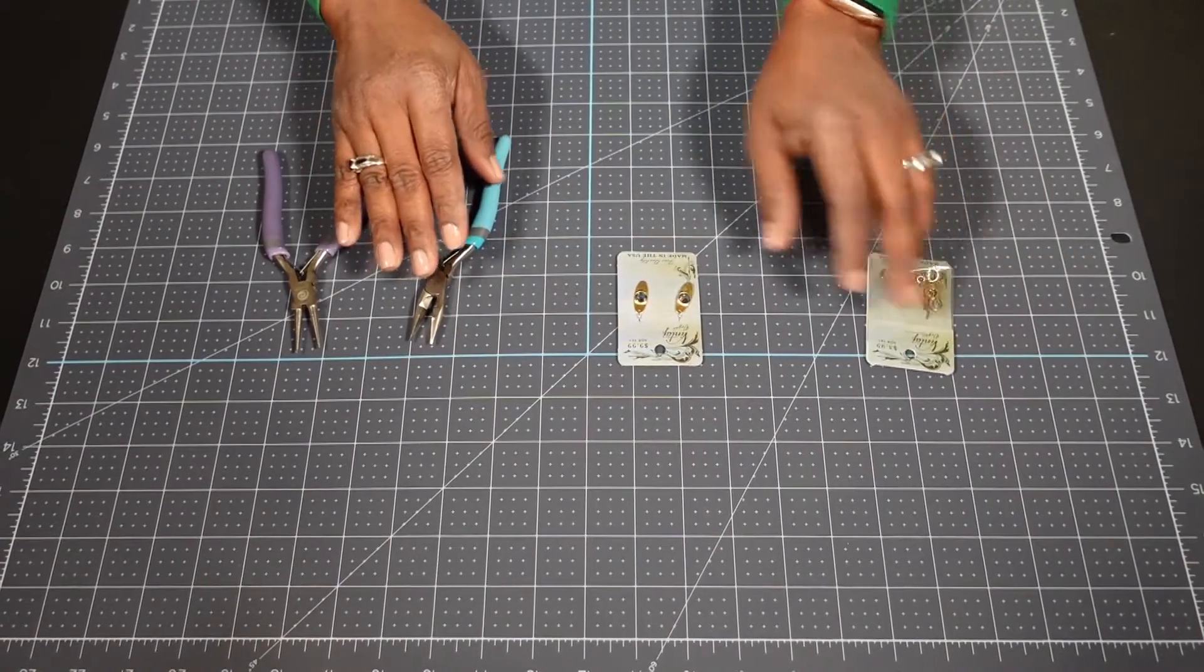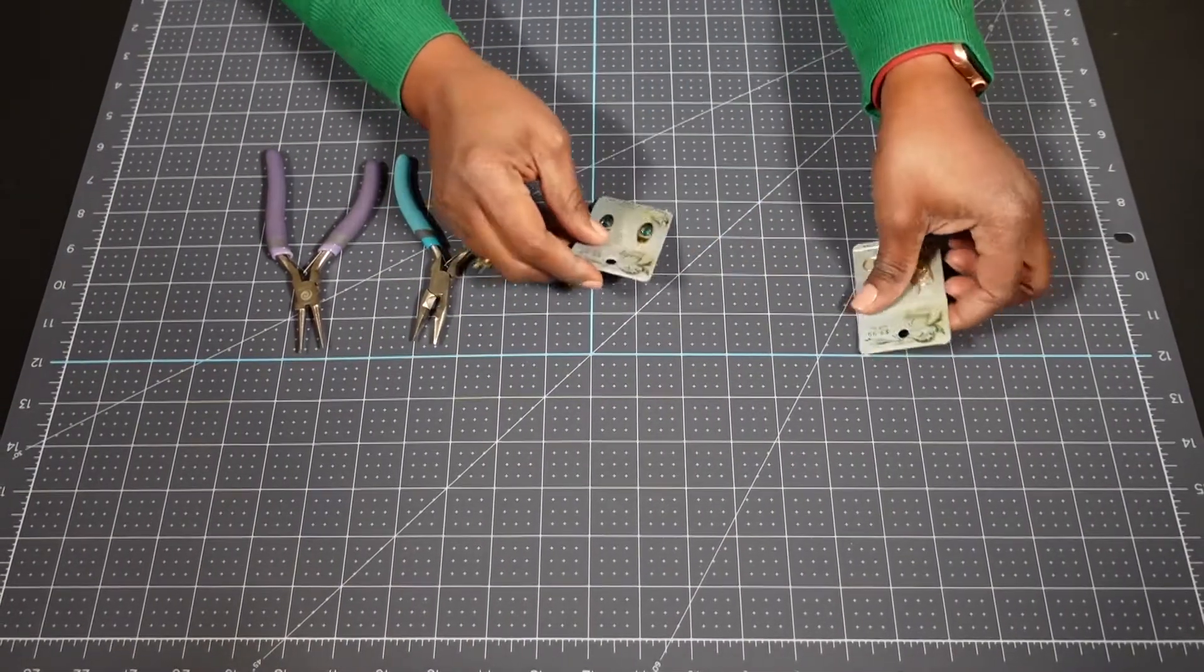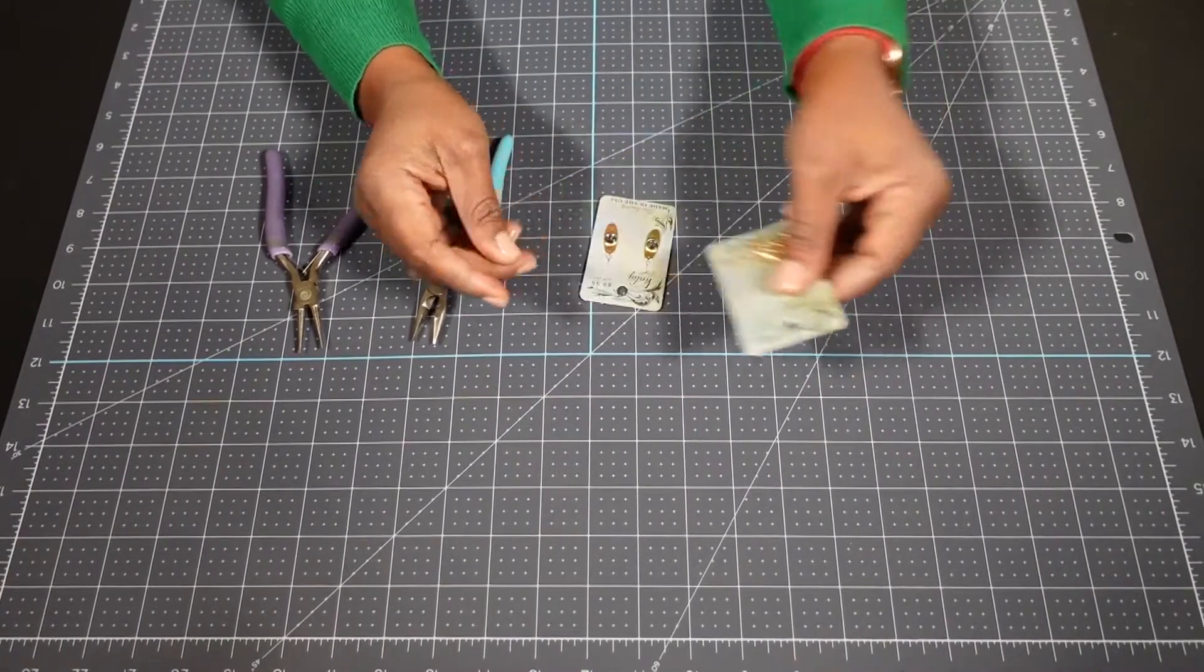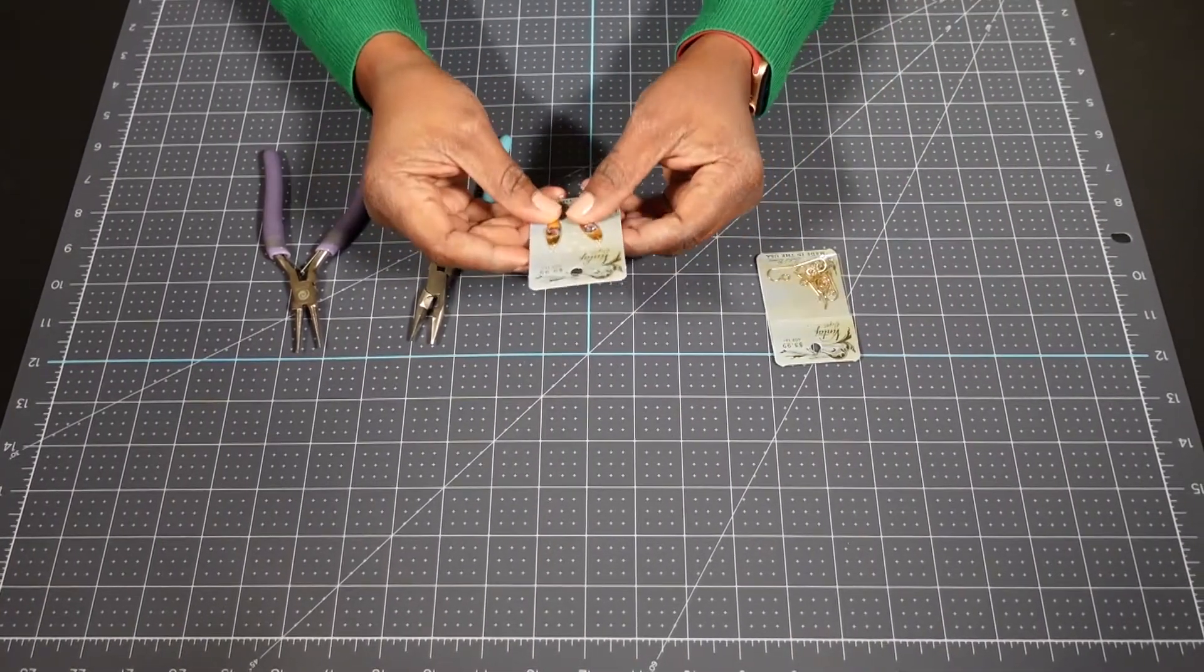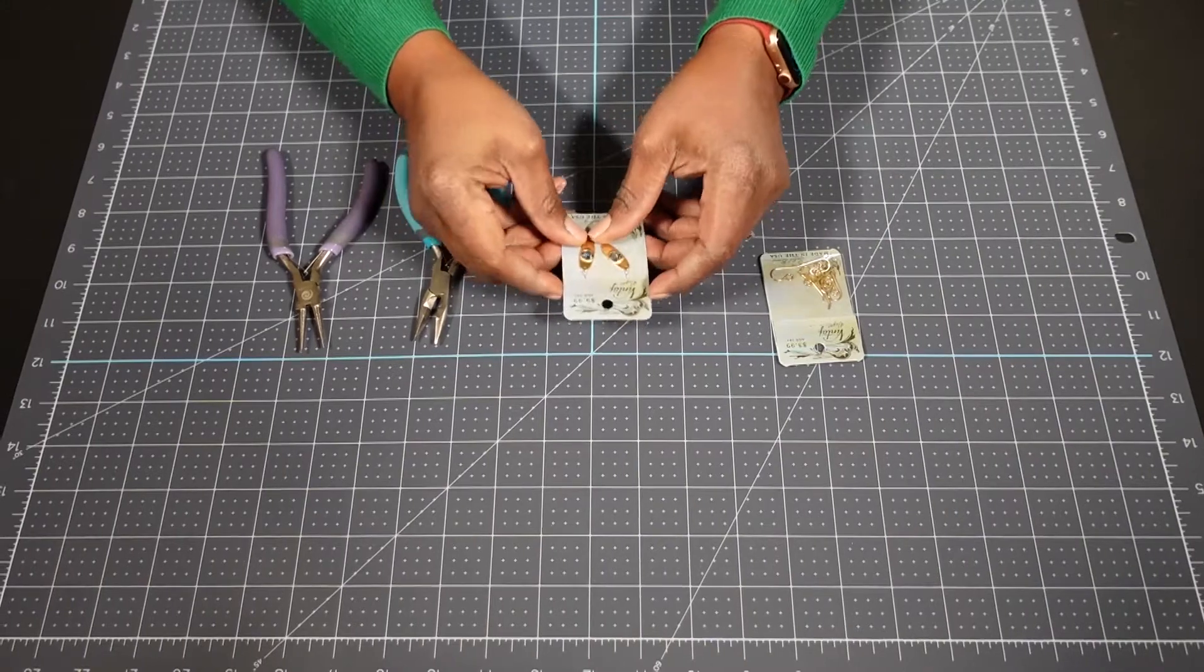So the first thing that we're going to do is we're going to take our ear wires out of this package and we're going to take our two pendants off of the backing.